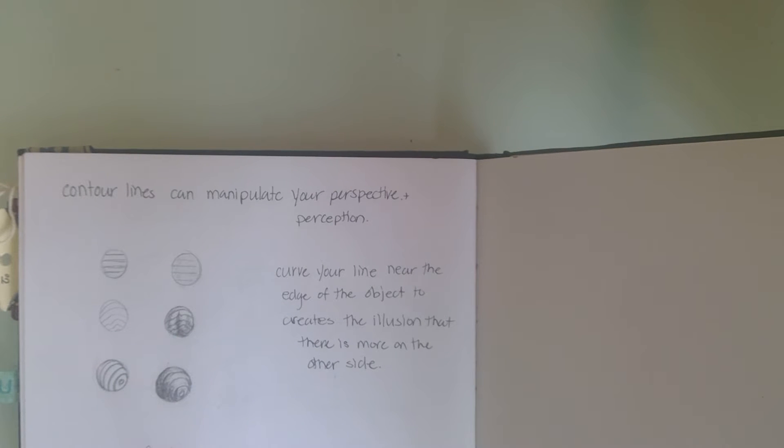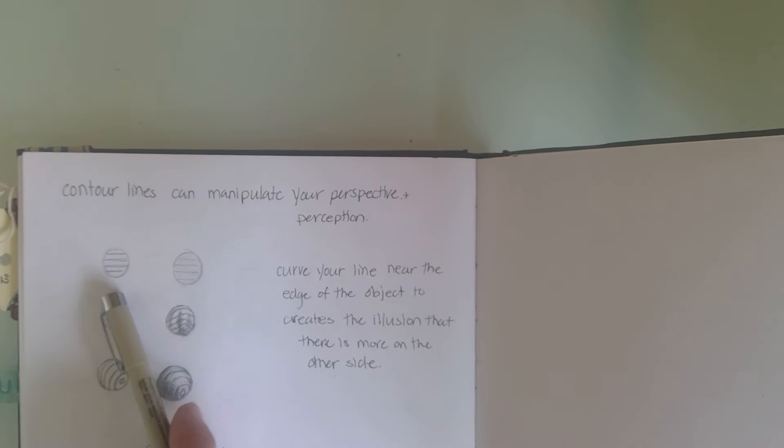In this last part of the lesson, I want to show you how contour lines can manipulate your perspective and perception. Here we have a circle - we've talked about this in class before.